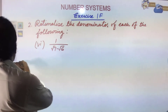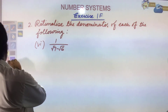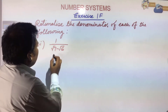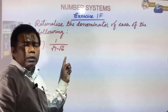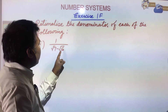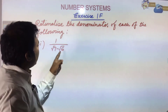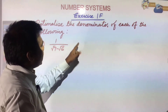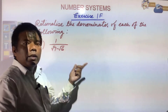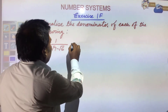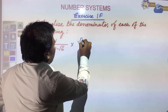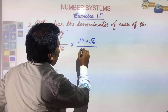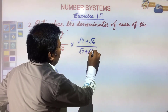Last day, if you remember, it was told about the rationalizing factor. The rationalizing factor of √7 minus √6 will be √7 plus √6. So it is required to be multiplied with √7 plus √6 in the numerator as well as in the denominator.